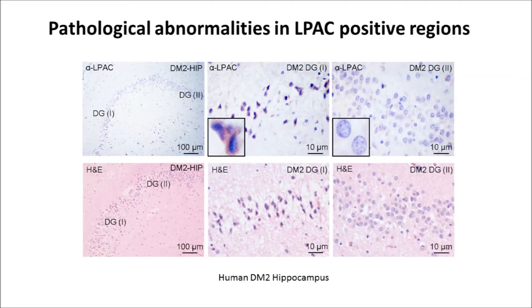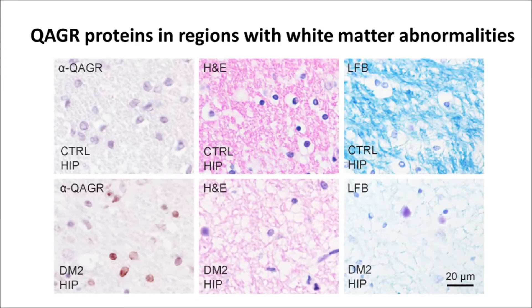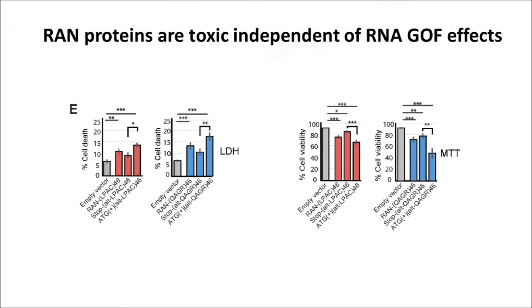The regions that show protein accumulation also have pathological abnormalities. When we looked at the QAGR proteins in the white matter regions, we found changes to the white matter. We did another series of experiments to tease apart whether the proteins themselves could be toxic by separating out the protein from the RNA. If we overexpress those proteins in cells, they do cause problems.